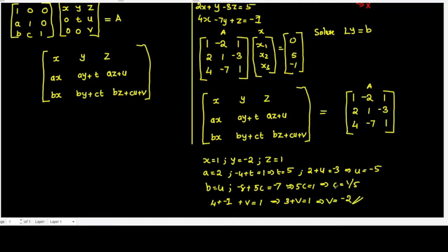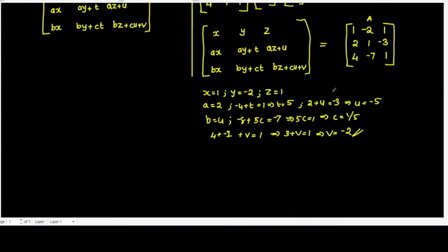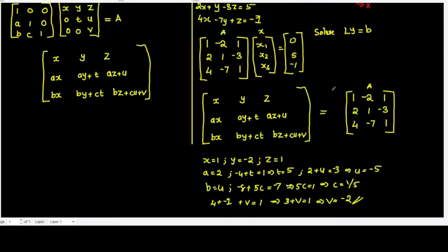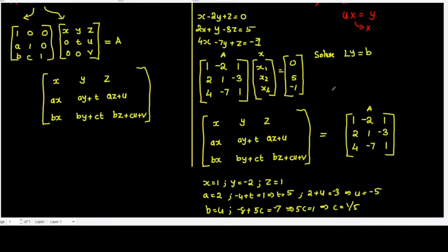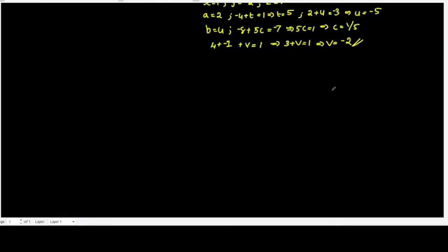So we got A factorized into L and U. The next step is to solve for Ly equal to B. L is a lower triangular matrix with unit diagonal elements. So L can be written as: first row 1, 0, 0; second row 2, 1, 0.